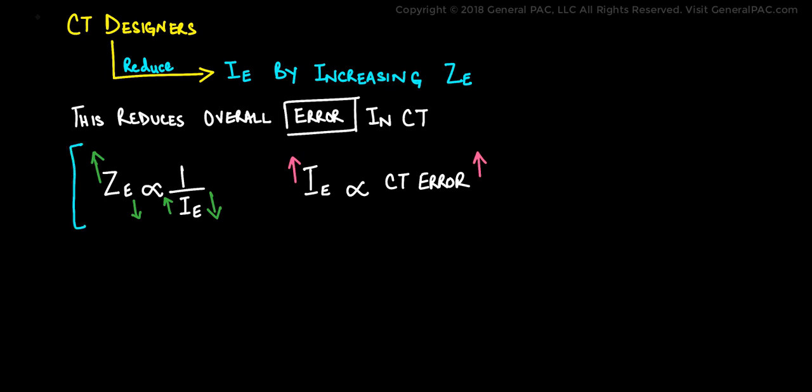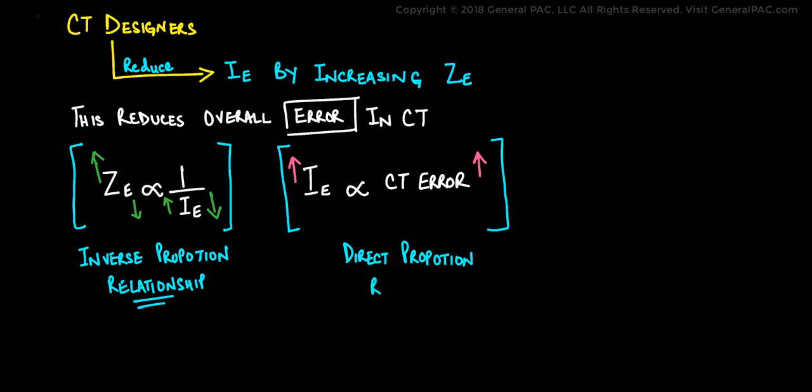Now how will we represent this mathematically? Well that is very simple. ZE is proportional to one over IE. So this is an inverse proportional relationship. If one goes up, the other goes down and vice versa. And IE, the excitation current, is directly proportional to the CT error. So if one goes up, the other goes up. And if one goes down, the other goes down with it.